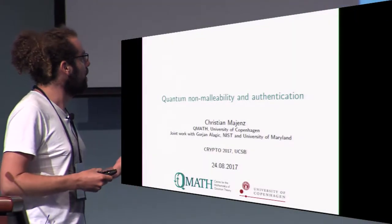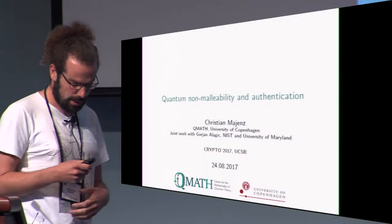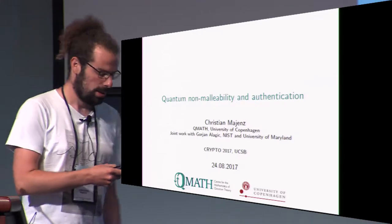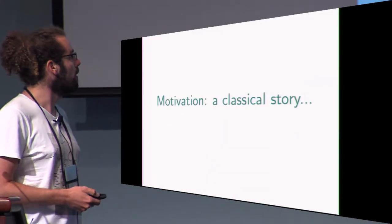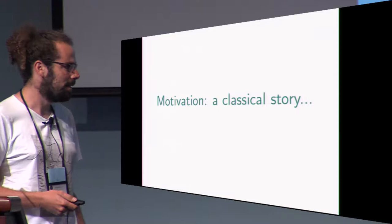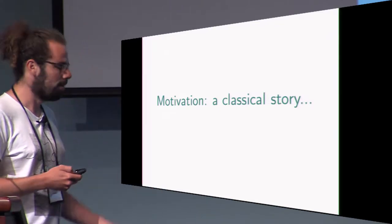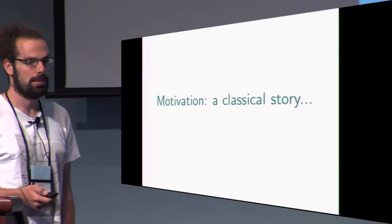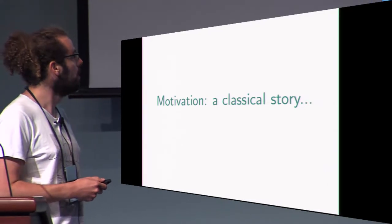I'm going to talk about quantum non-malleability and authentication. This is joint work with Gorian Allogic. I want to start with a classical motivation to get an intuition for what these security notions want to do.